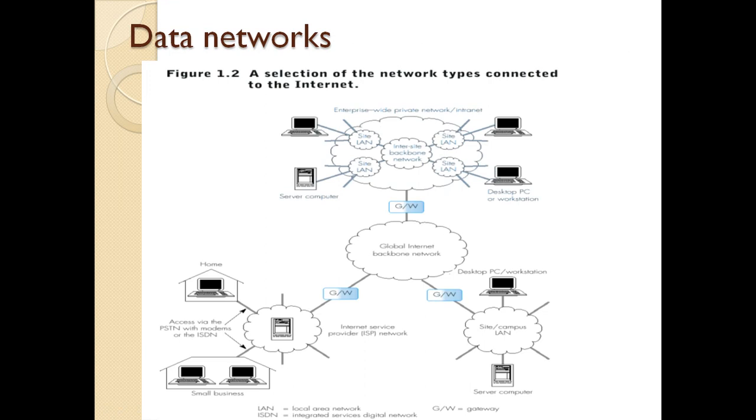This data network is to provide the internet network. As you can see here, we have a global internet backbone network. To that, we have three separate networks here. One is an enterprise-wide private network. The other one is the regular site or campus LAN. This is the ISP. This internet service provider is used at homes or small businesses where we have one or two or more systems. The home system or small business system will be directly connected to the ISP and the ISP will be connected to the global internet backbone.